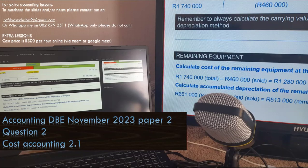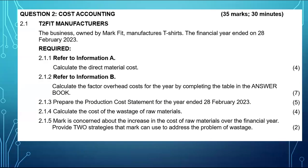This will be a continuation of the DBE November examination for 2023, paper two. I'll be focusing on question two, which is all about cost accounting. For the first part, I'll be working on 2.1. We have T2 Fit Manufacturers — the business manufactures T-shirts. The financial year ended 28 February 2023.